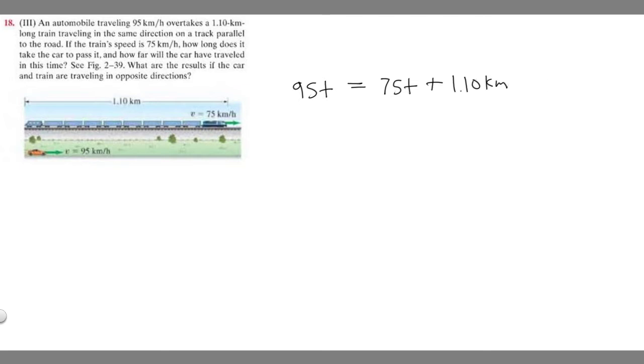Now all we've got to do is solve for t. That's the amount of time it takes. If you minus 75t, you get 20t equals 1.10. Divide by 20, and t equals 1.10 divided by 20.